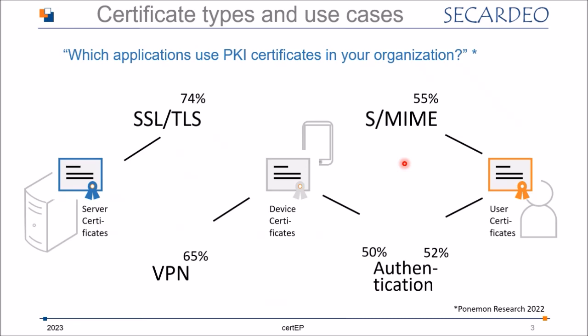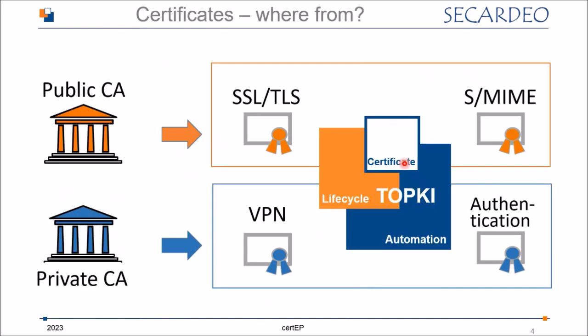There are other types of certificates, but these are the most important ones we deal with day to day. The next question is: where do these certificates come from? If we talk about certificates for communication with partners, we need certificates from a public CA — like SSL certificates from public CAs for public internet web servers, or S/MIME certificates where trust is offered by the public CA. For internal applications like VPN or authentication, typically a private CA is in place. All these kinds of certificates and CAs are managed with our platform.